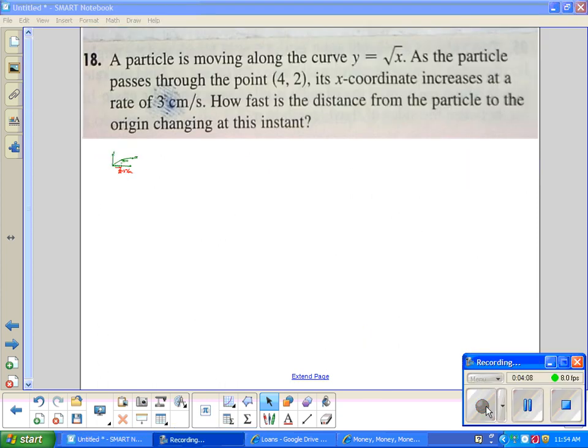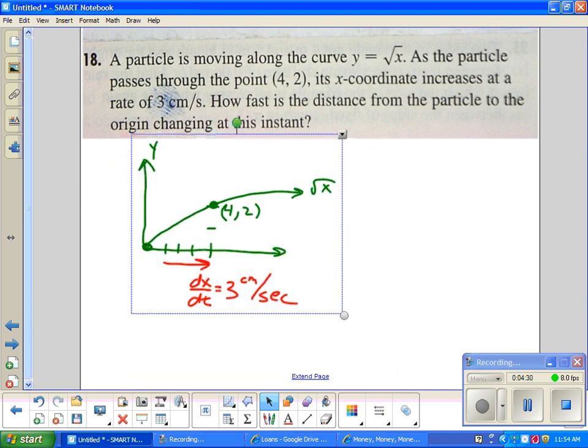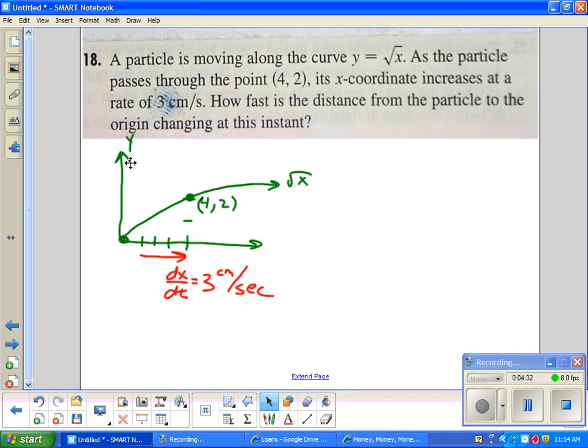Problem 18 is the next one. A particle is moving on a curve Y equals square root of X. As the particle passes through point (4,2), its x-coordinate increases at a rate of 3 centimeters per second. How fast is the distance from the particle to the origin changing at this instant? How fast, again, related rate. Make this graph here. We have a root function at (4,2). dx/dt is changing at 3 centimeters per minute. They are asking how fast this rate, which I will call z again, is changing.